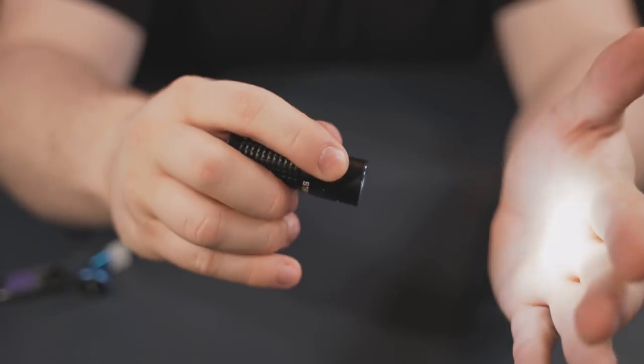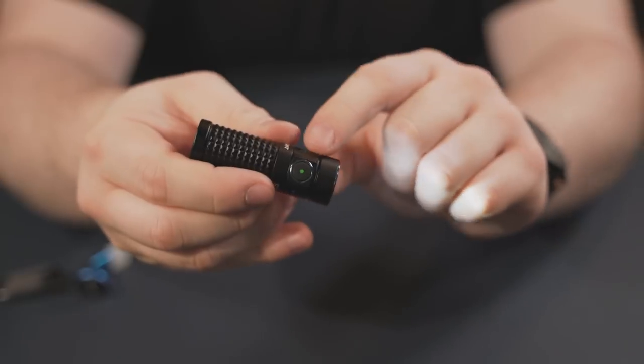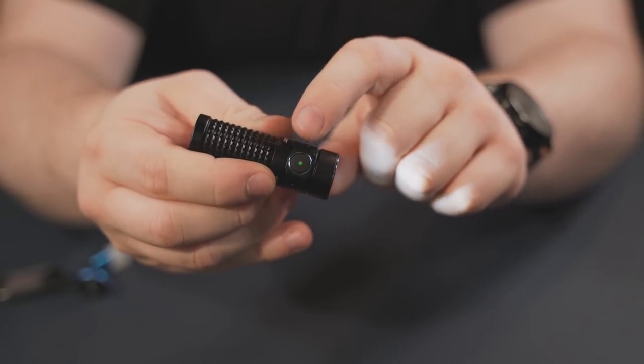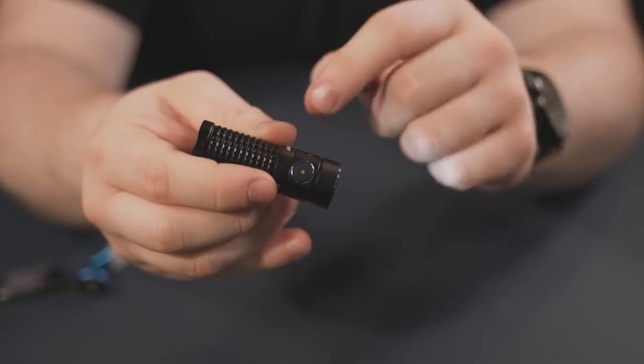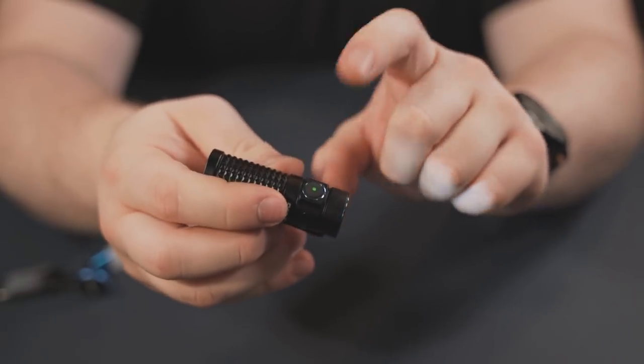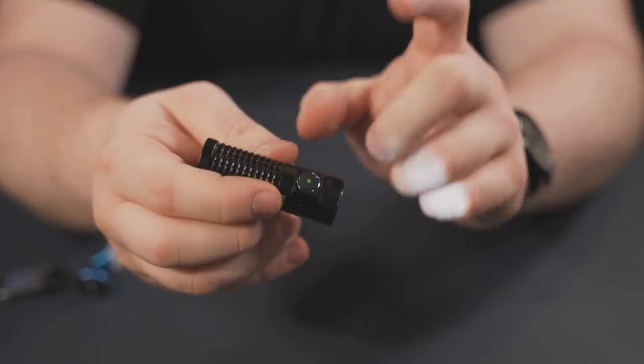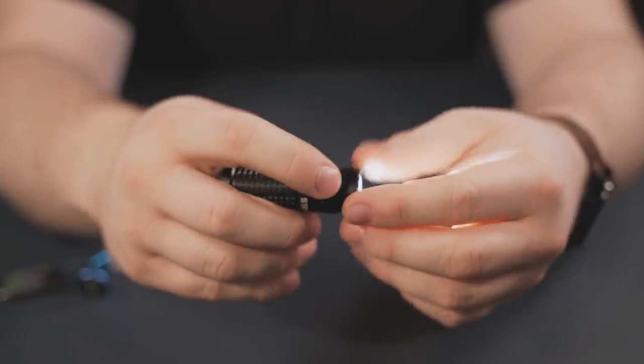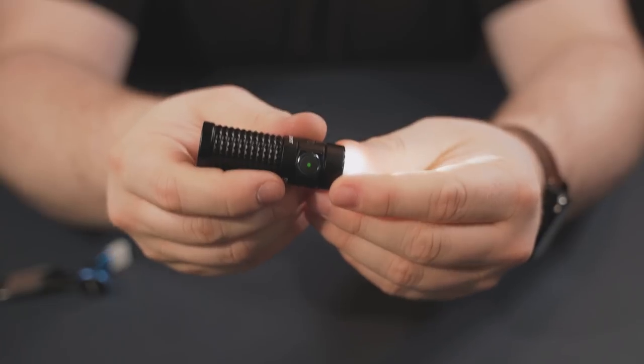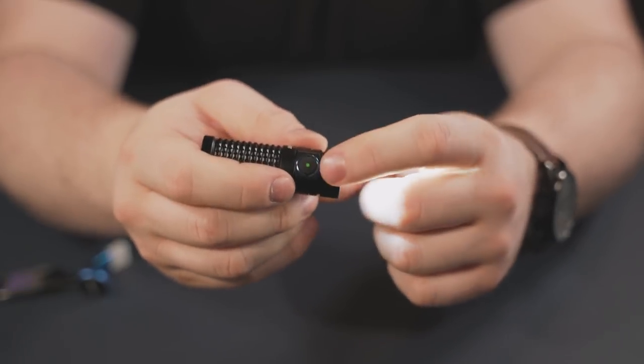So the way this flashlight works is you click to turn it on. That is constant on. And you saw that little green indicator light turn on there. Once you get below, I believe, maybe 60%, once you get below a certain percent, that will turn yellow. And then after you get below another percent, it'll turn red, indicating that it's time to charge, which is really, really nice. A lot of these flashlights don't have charge level indicators.